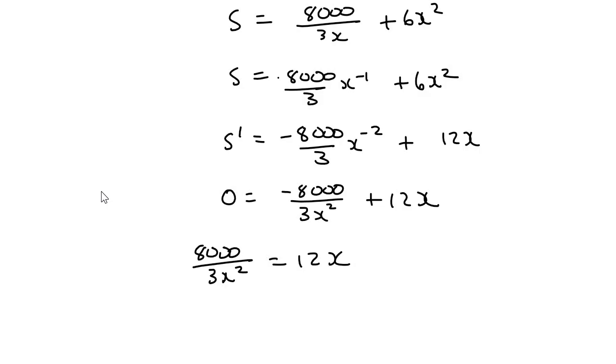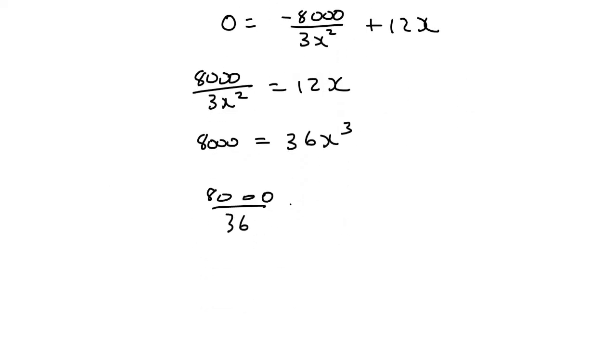And then I'm going to multiply 3x squared over. So you're going to end up with 8,000 equals to 36x to the power of 3. Now it's really easy because now what we can do is we can say 8,000 divided by 36. And that's going to be x cubed. And then you would take the third root of that.